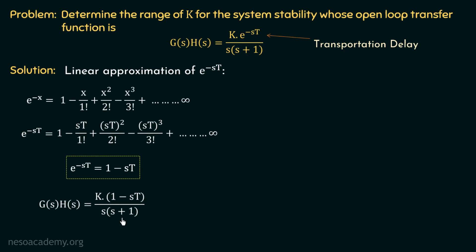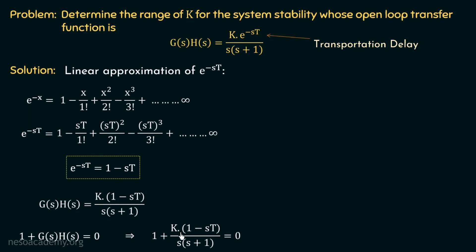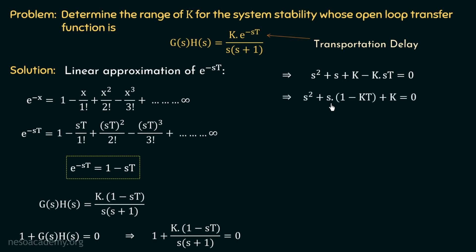Now we can move with the same procedure of RH criteria. We will form the characteristic equation for this system using 1 plus GSH equal to 0. Substituting the expression, we have 1 plus k multiplied with 1 minus st over s multiplied with s plus 1 equal to 0. Taking the LCM and expanding gives s squared plus s plus k minus k multiplied with st equal to 0. Taking s common from the two s terms, we have s squared plus s multiplied with 1 minus kt plus k equal to 0, which is the characteristic equation for this system.